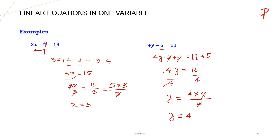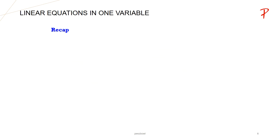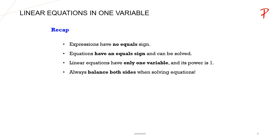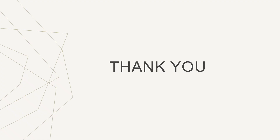So in the first equation we found x=5, and in the second equation we found y=4. Let us recap: expressions have no equal sign; equations have an equal sign and can be solved; linear equations have only one variable and its power is 1; always balance both sides when solving equations. In my next video, we will learn how to solve an equation where variables appear on both sides. Thanks for watching.